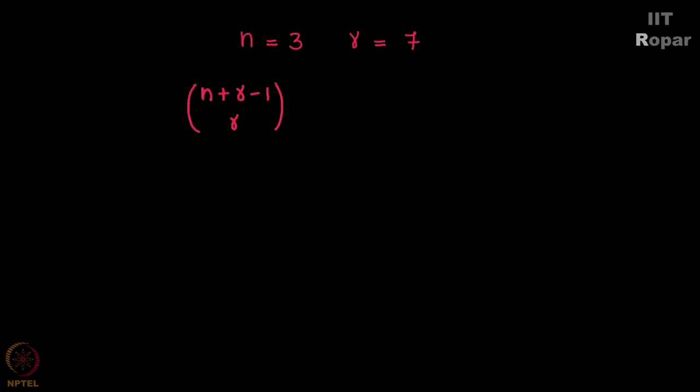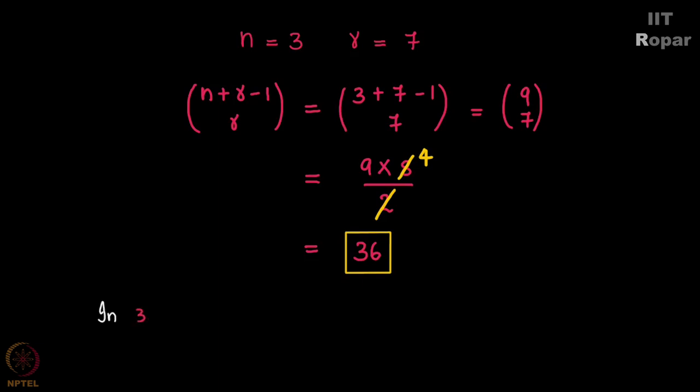So if N is 3 and R is 7, from the formula N plus R minus 1 choose R, it follows that 3 plus 7 minus 1 choose 7 is equal to 9 choose 7, which is 9 into 8 by 2. I actually got this from 9 factorial by 7 factorial into 2 factorial, and on solving this it gives me the answer 36.